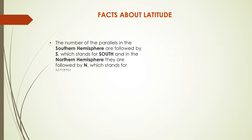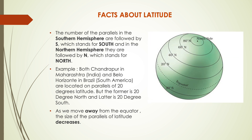Now some more interesting facts about latitude. The parallels in the southern hemisphere are followed by S, which stands for South, and in the northern hemisphere they are followed by N, which stands for North. For example, both Chandrapur in Maharashtra, India and a location in Brazil, South America are located on the parallel of 20 degree latitude — but Chandrapur is at 20 degrees North, meaning it lies in the northern hemisphere. As we move away from the equator towards the poles, the size of the parallels of latitude decreases.